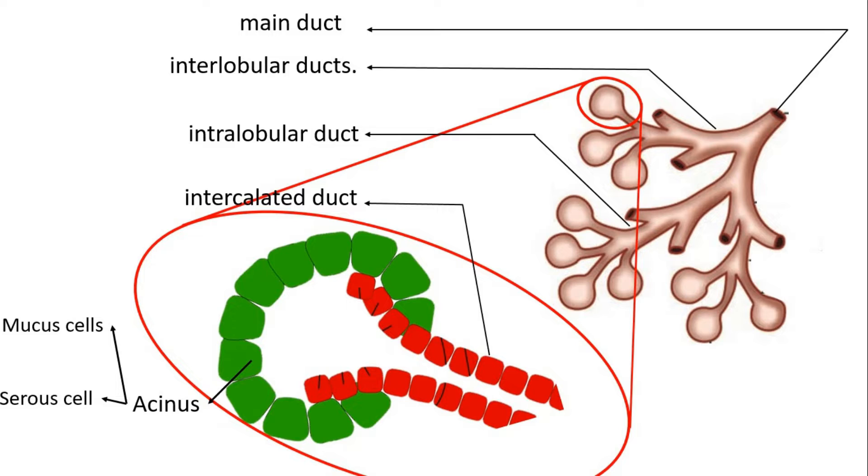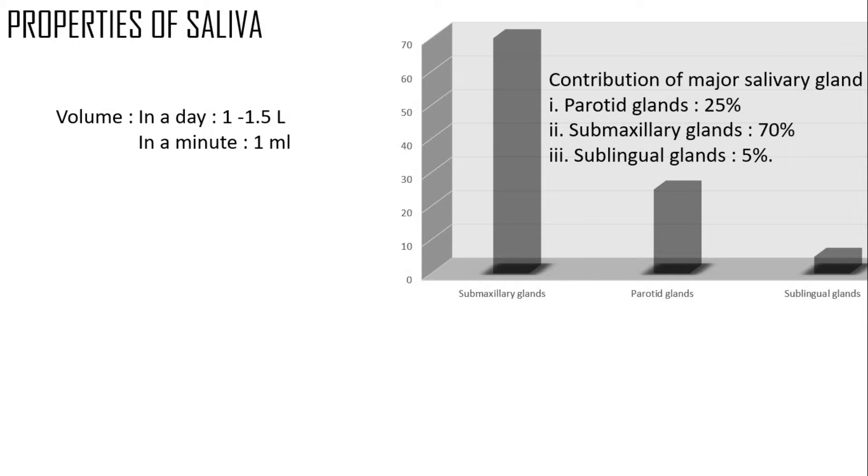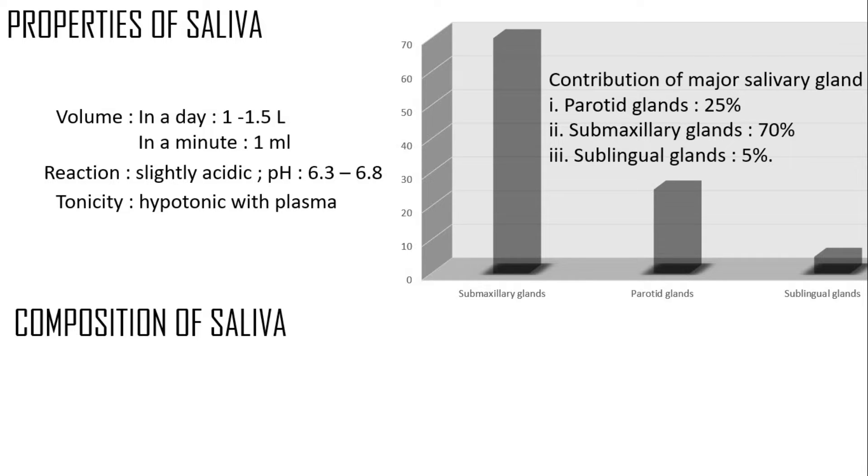Next, let's look at the properties of saliva. In a day, a normal human secretes about 1 to 1.5 liters per day or 1 milliliter per minute. Even though the parotid gland is the largest gland, it contributes only 25% of the total, while the submandibular gland contributes the most at 70%. The sublingual gland, being the smallest, contributes only 5%. The saliva is slightly acidic and hypotonic to plasma. Talking about the composition of saliva, it consists of 99.5% water and 0.5% solids. The solid part comprises organic, inorganic, and gaseous substances.